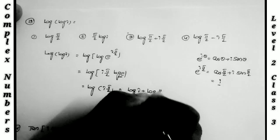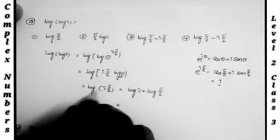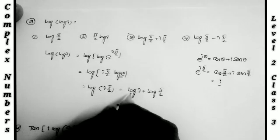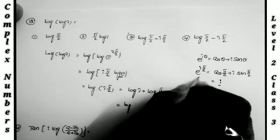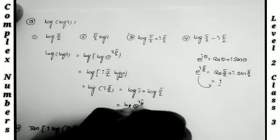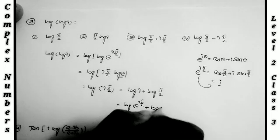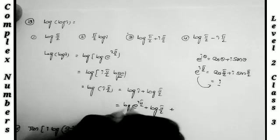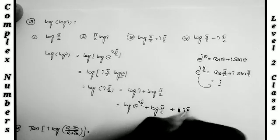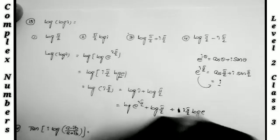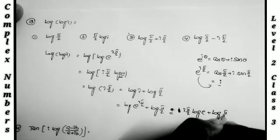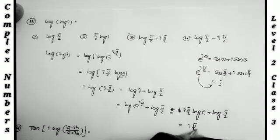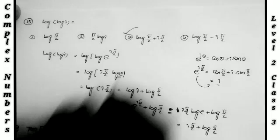Substituting i = e^(iπ/2) again: log i = (iπ/2)·log e = iπ/2. Therefore log(log(i)) = iπ/2 + log(π/2), which is the third option.